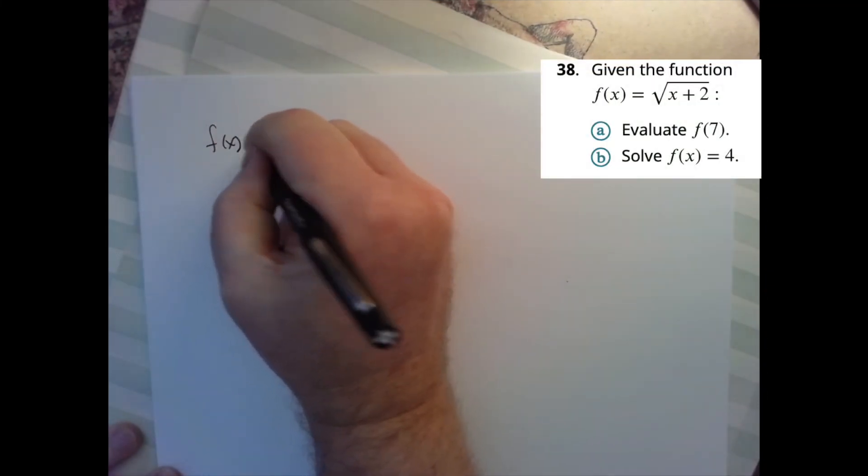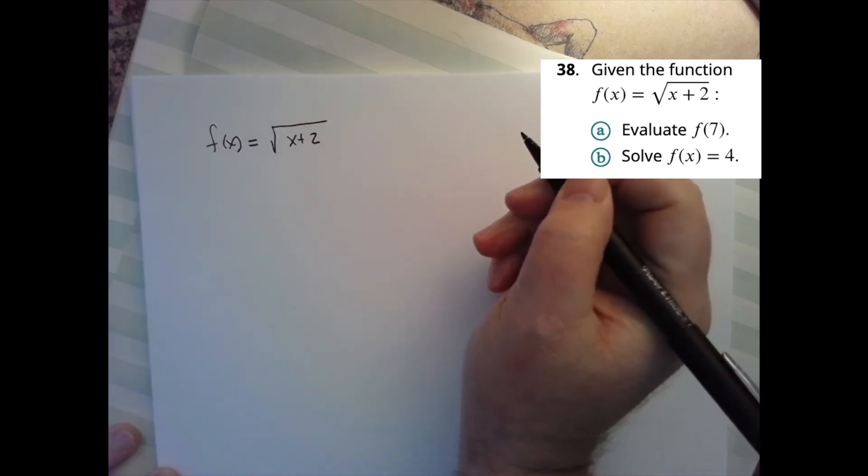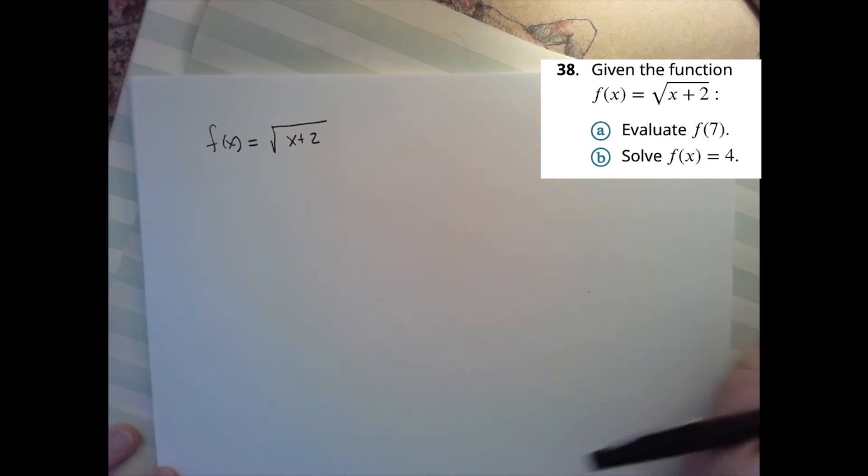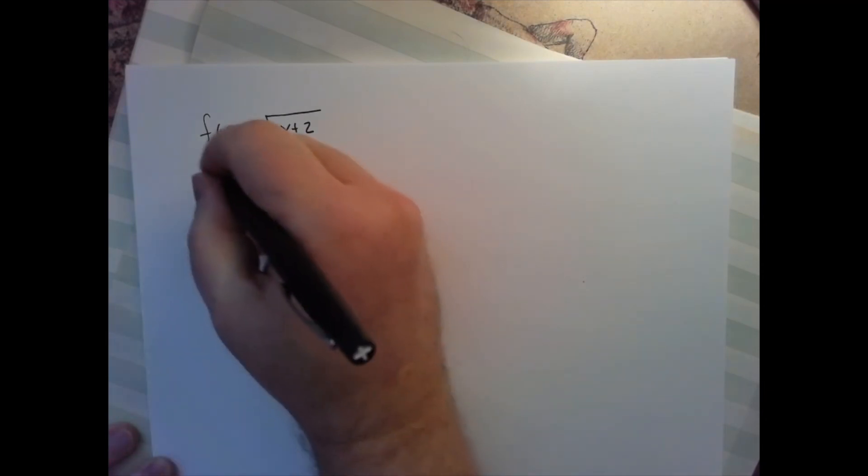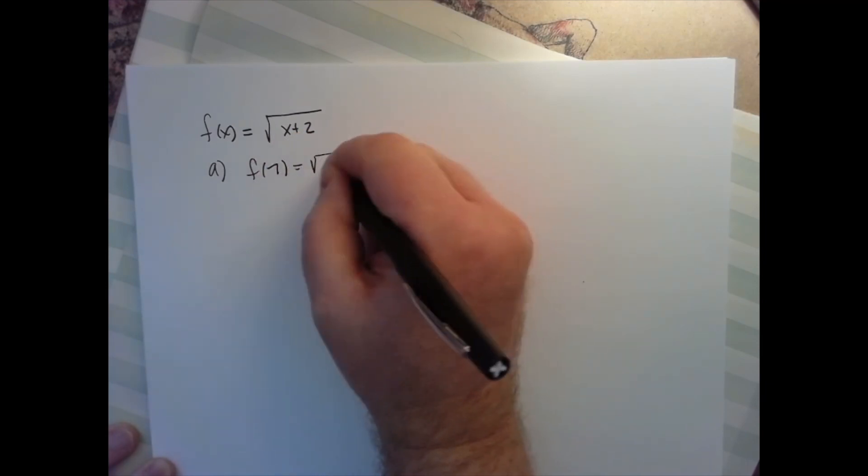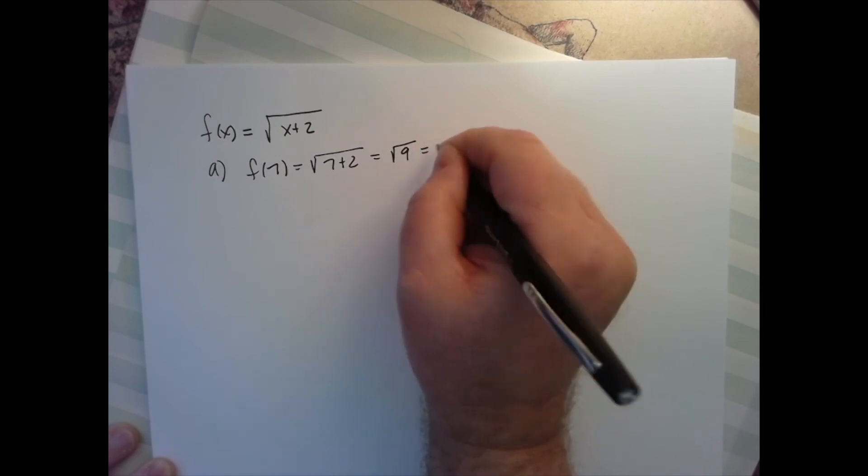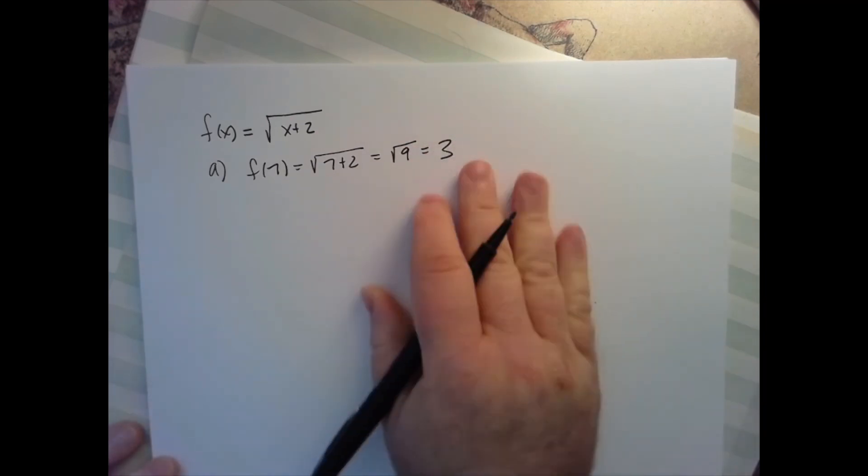So let's try this little question here. Square root of x plus two. f(x) equals the square root of x plus two. Okay, so we want to evaluate f of seven. So let's just plug it in, right? Square root of nine is three. Simple enough.